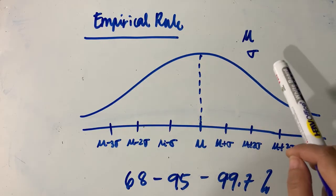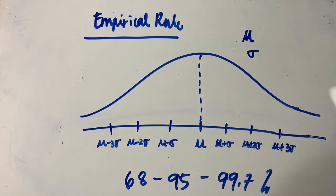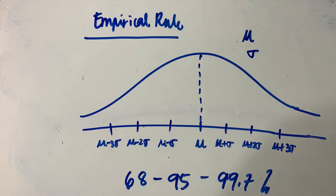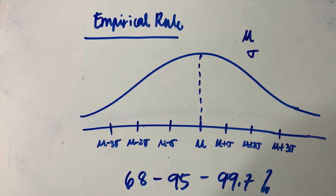Or if the data values are taken from the sample, then we will make use of x-bar for the sample mean and s for our standard deviation from the sample data. We have to keep in mind that the distribution must be assumed to be normally distributed so that we can make use of the empirical rule.